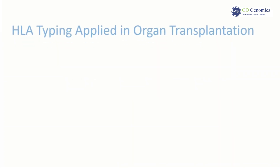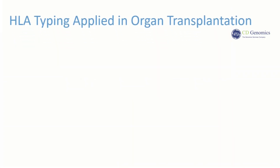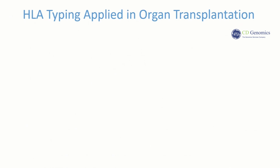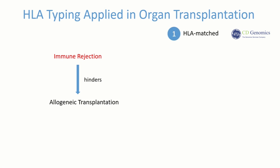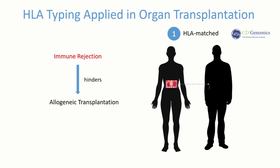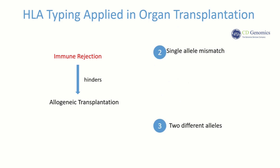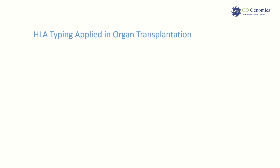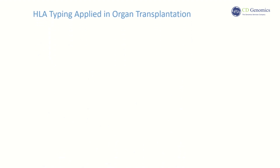In this section, we delve into the critical application of HLA typing in organ transplantation. Clinical practice has demonstrated that apart from identical twins, the main barrier to successful transplantation is immune rejection in allogeneic transplants. Studies show that kidney transplants between HLA-identical siblings have success rates exceeding 90%, but outcomes significantly worsen with even a single allele mismatch, with survival rates dropping drastically with two different alleles. Understanding HLA provides a critical theoretical foundation for transplant matching, representing a major achievement in modern medicine.